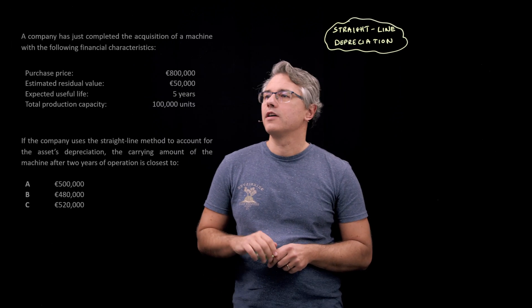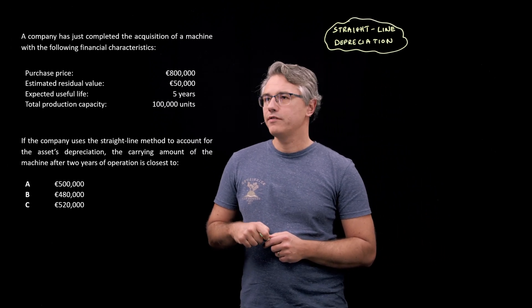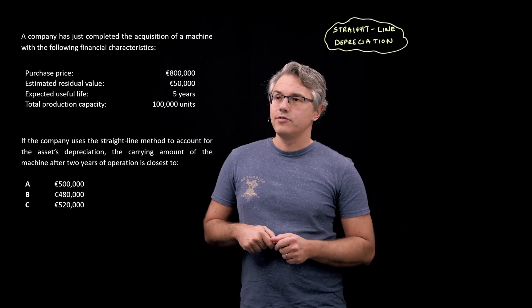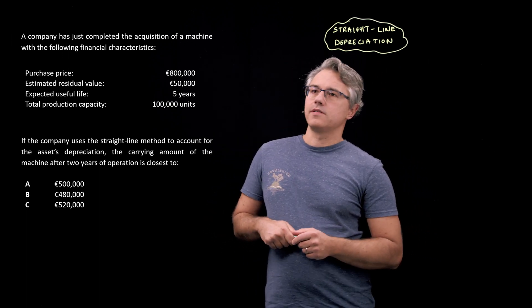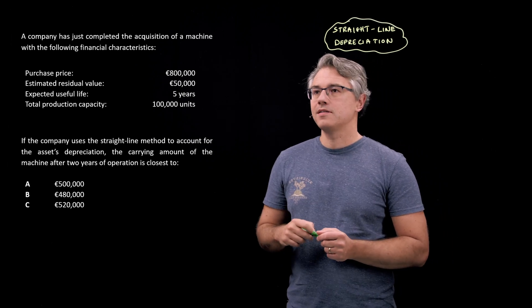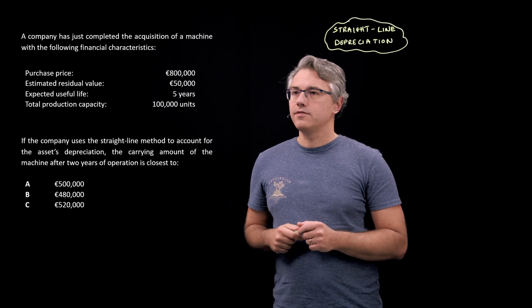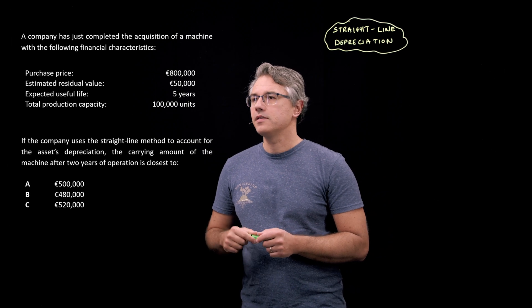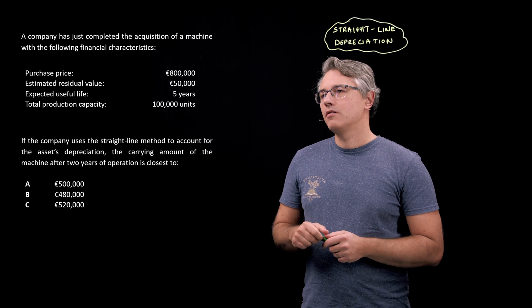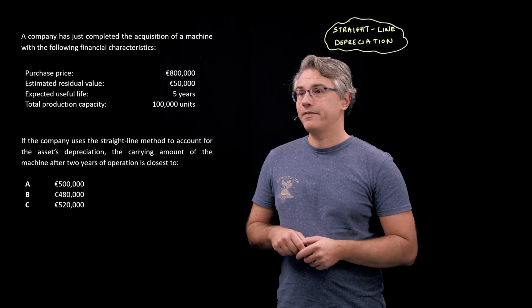This is the question which I want us to have a go at. A company has just completed the acquisition of a machine with the following financial characteristics. We've got the purchase price, the estimated residual value of that machine, so our estimate of how much we will potentially receive from its sale at the end of its useful life at the company. The expected useful life is five years, and we're also told about the machine's total production capacity - it's supposed to be able to produce 100,000 units.